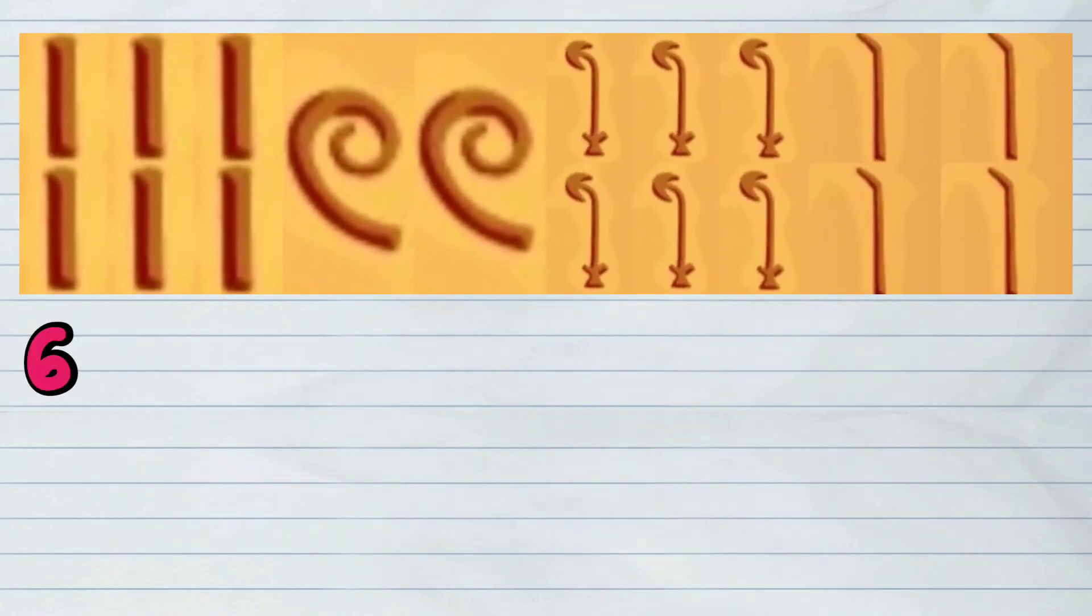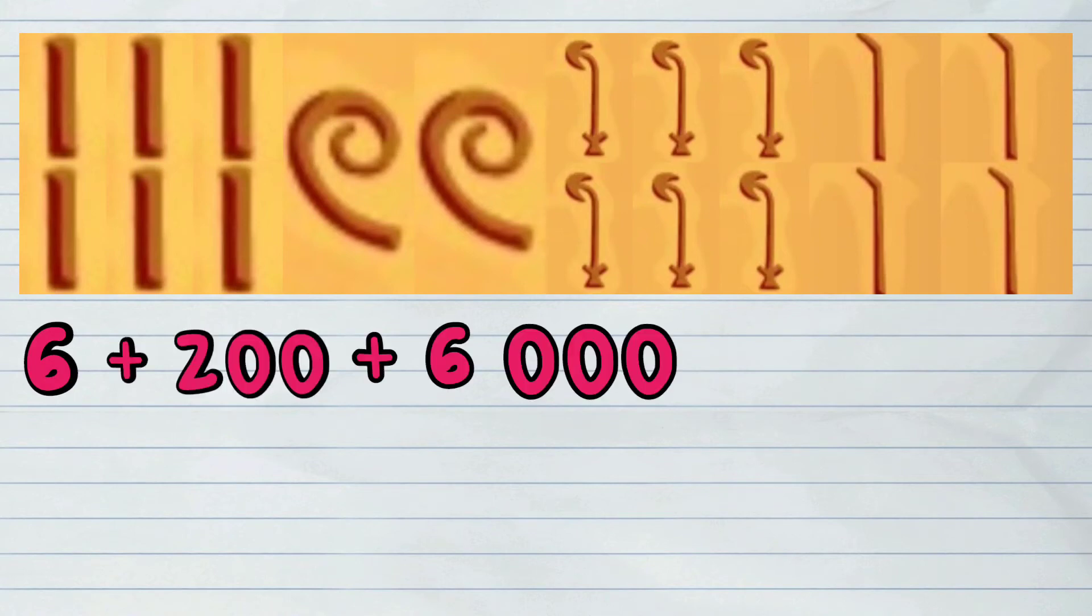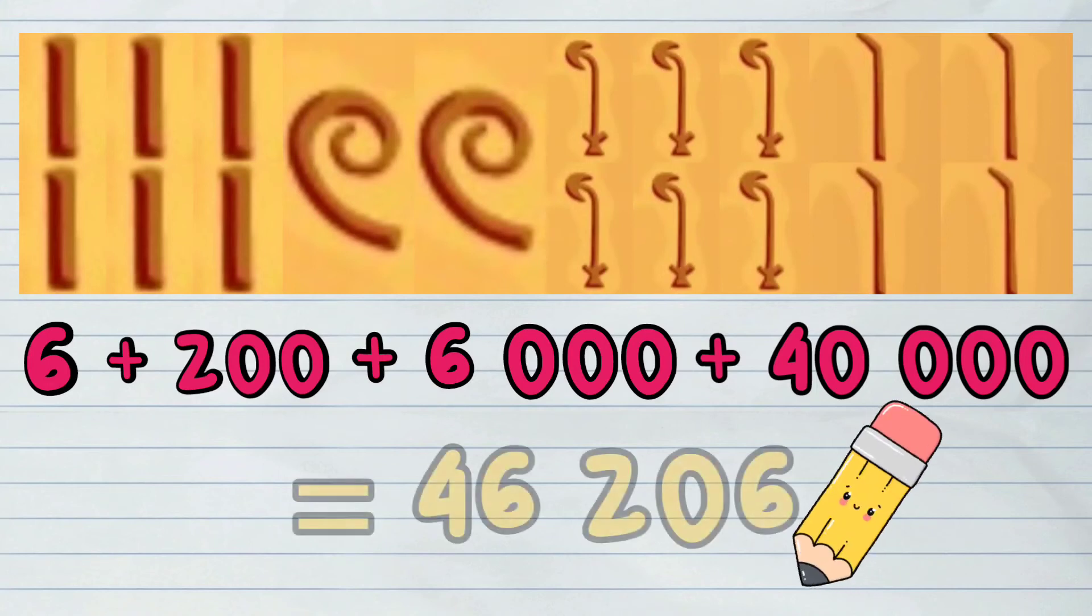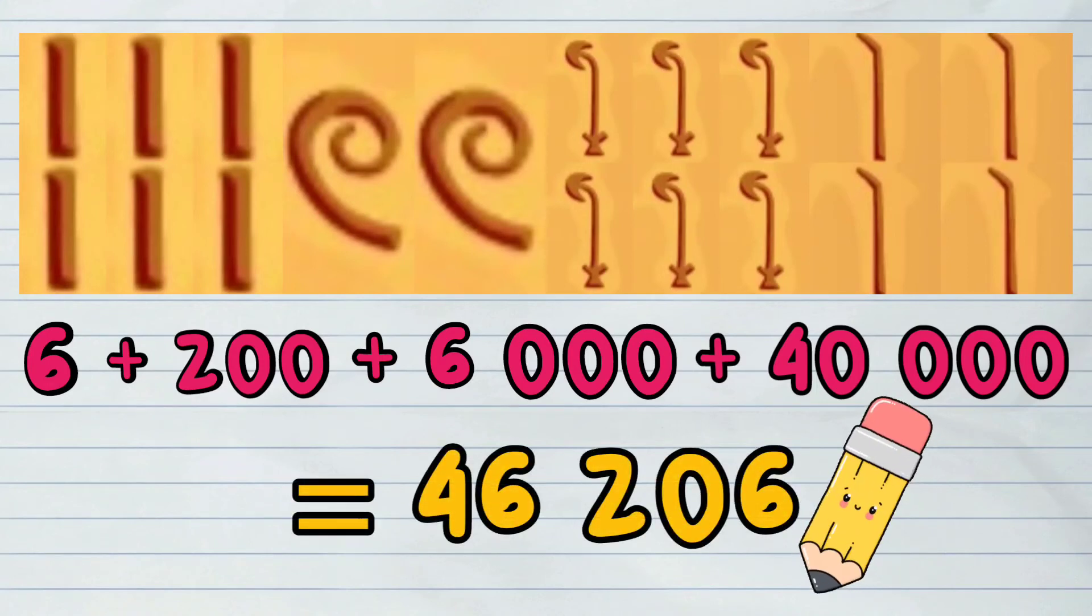So adding up, we have 6 plus 200 plus 6,000 plus 40,000, which gives the answer of 46,206.